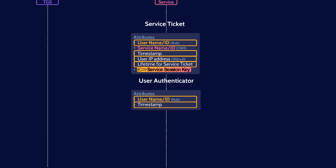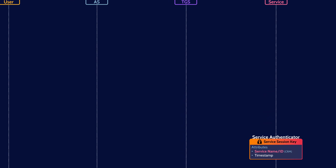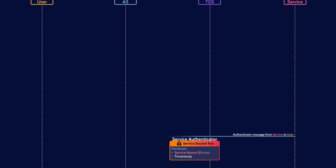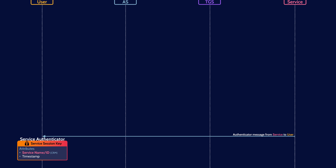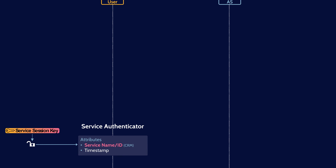The service now needs to create its own authenticator message to send to the user. Similar to a user authenticator message, the service authenticator includes the service's ID and timestamp, and is encrypted with the service session key. This service authenticator message is sent to the user. The user decrypts it using the symmetric service session key — which the user was sent by the TGS. The user will now verify that the service name contained within the authenticator is the service the user was expecting to talk to, thus completing the mutual authentication.